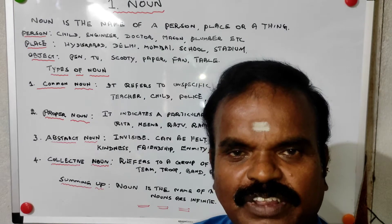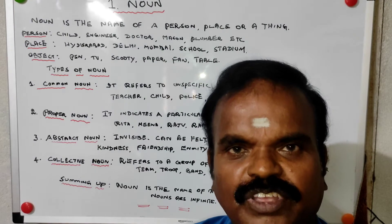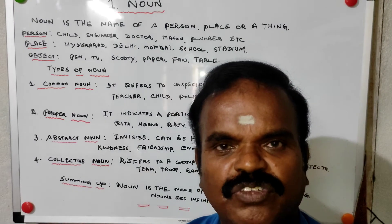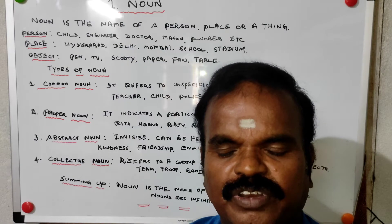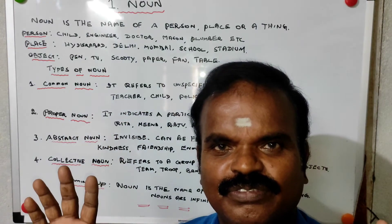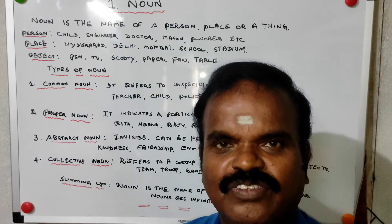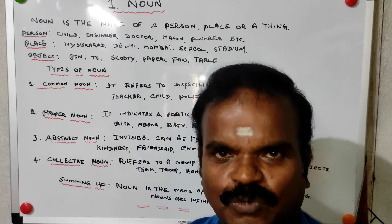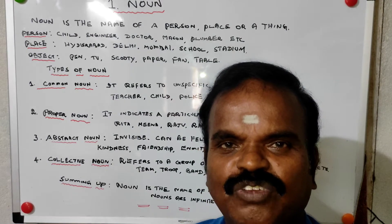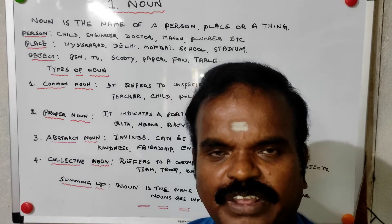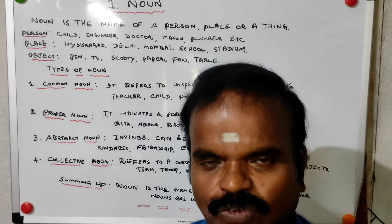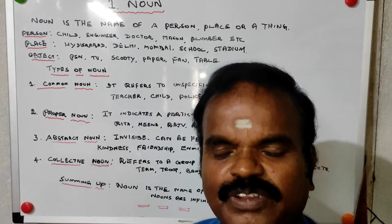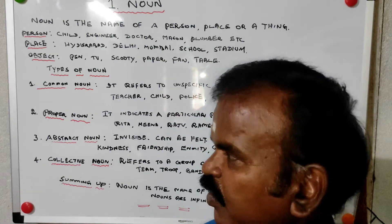So the main thing is: noun is the name of a person, place, or an object. Nouns are endless. There are different types of nouns — let us try to know something about them to enrich our understanding.